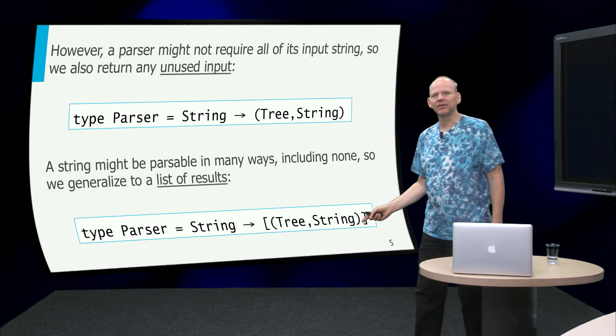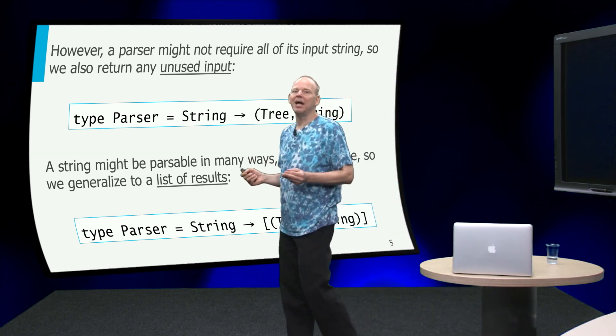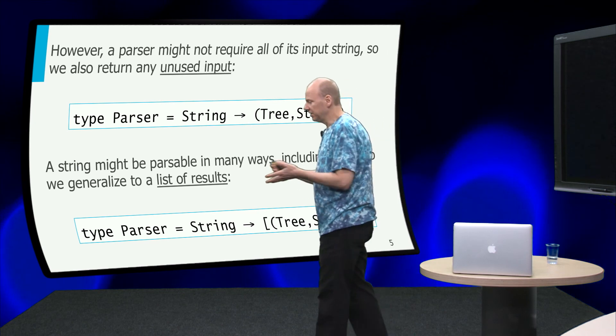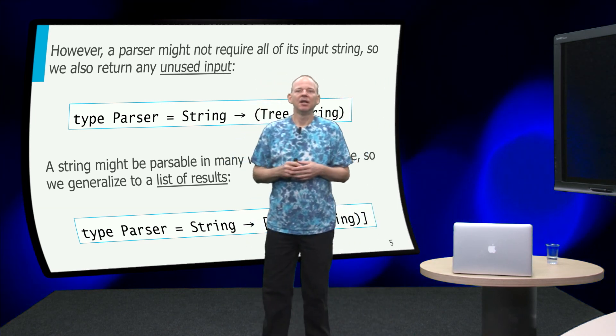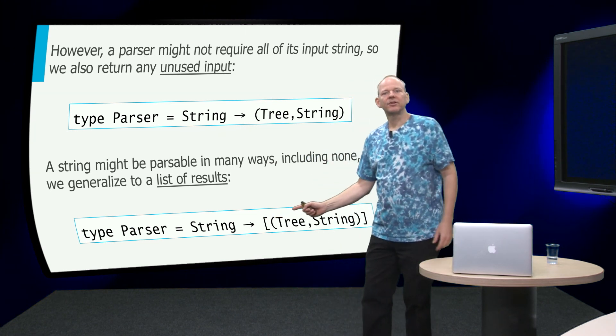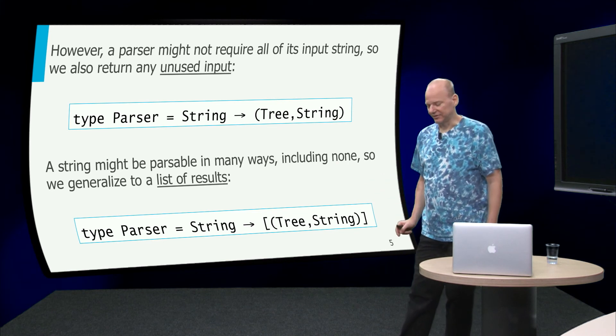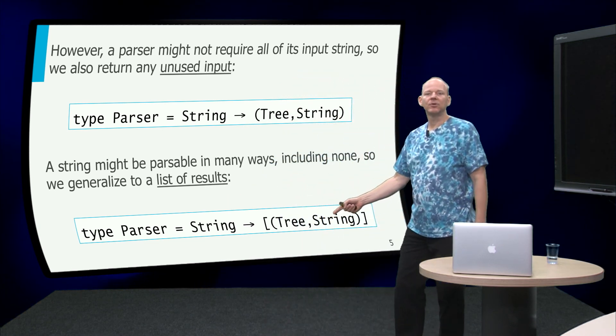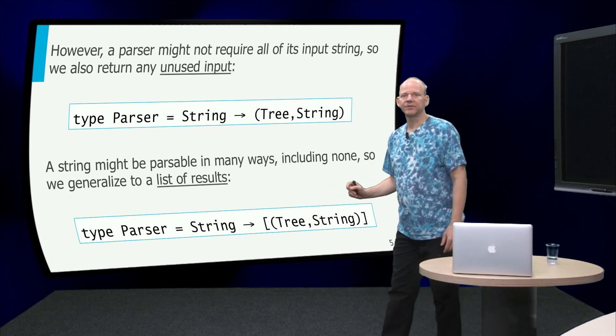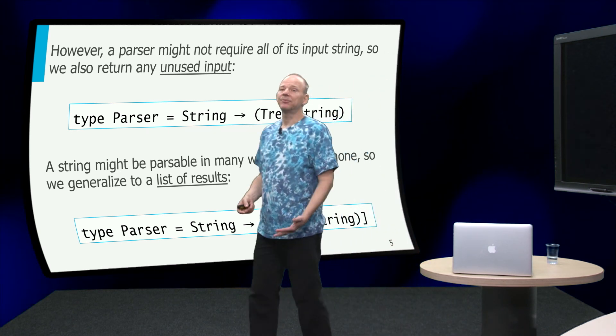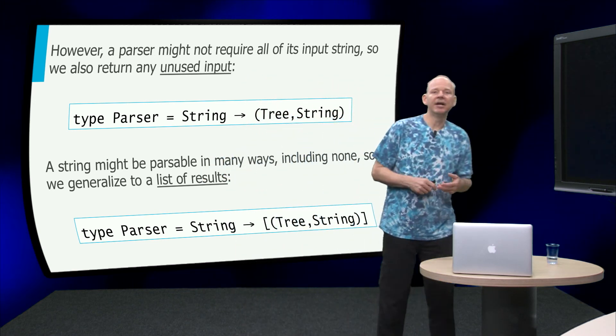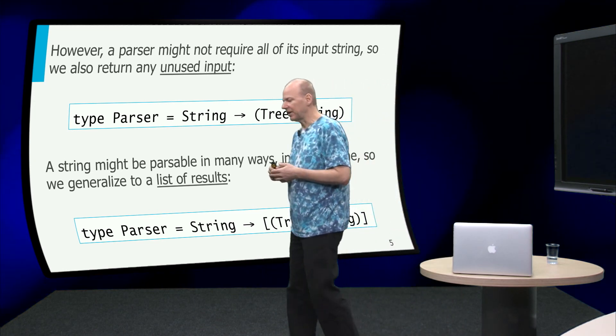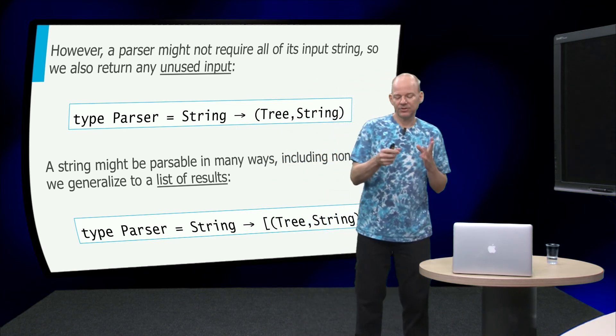Now, what we can also do, in general, is that when we take a string, it can be parsed in many ways. There is not a unique way if the grammar is ambiguous. Or maybe this string cannot be parsed into a tree. And in that case, what we want to do is we want to return a list of pairs of trees and strings. So these are all the possible ways that I can parse this string into a pair of a tree and the remainder of the string. And that list can be empty in case there is no parse. Or if it is ambiguous, it can contain many pairs. Or if it is a nonambiguous grammar, it will either be a list that has a single element or the empty list.